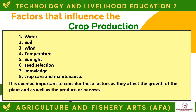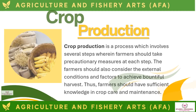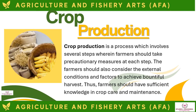The factors that influence crop production include water, soil, wind, temperature, sunlight, seed selection, knowledge, and crop care and maintenance. It is important to consider these factors as they affect the growth of the plant and the produce or harvest. Crop production involves several steps where farmers should take precautionary measures and have sufficient knowledge in crop care and maintenance.